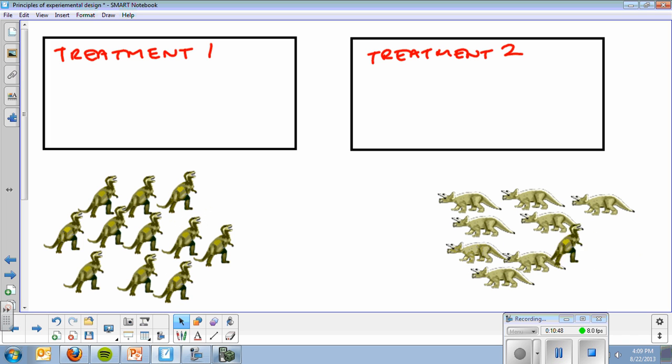And then, within each one of these groups, I'm going to randomly assign. Let's say here, there are 12 T-Rexes and 8 Triceratops. I'll number them 1 to 12 for the T-Rexes, and 1 to 8 for the Triceratops. And I will randomly select.